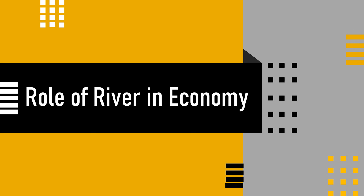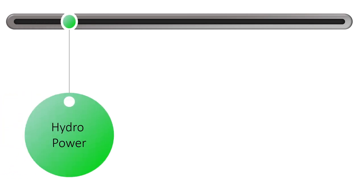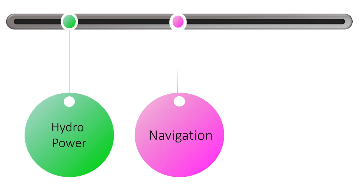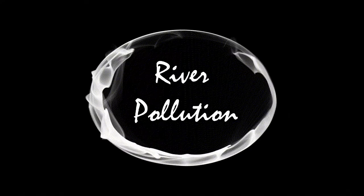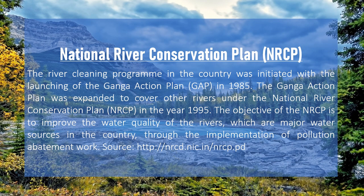Now we will talk about the role of rivers in the Indian economy. The first role is hydropower — rivers play a vital role in producing hydroelectricity. Next is navigation — moving by ship from one place to another, either for trade and commerce or for travel. Rivers are also very important for irrigation, as river water is widely used for agricultural purposes.